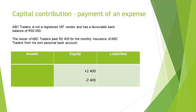The owner can also make a contribution by paying one of the expenses of the business on behalf of the business. So, if the owner of ABC Traders paid 2,400 rand for the monthly insurance of ABC Traders from his own personal bank account, that will mean that equity will increase with 2,400 rand because that is the value of the capital contribution, and the expenses of the business, which in this case is insurance, will decrease equity with 2,400 rand. The capital account will be credited and the insurance account will be debited.